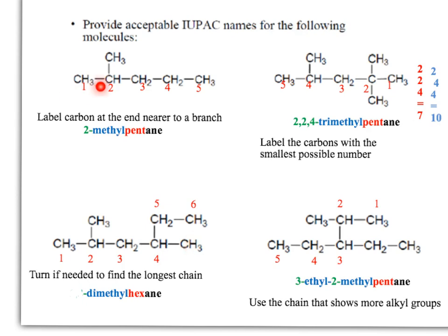So in the first example, this one is very simple. Everybody probably would know that this is a pentane because we have five carbons long. The ANE is the family name. It has a methyl on position number two, so this one is a 2-methylpentane. Easy.